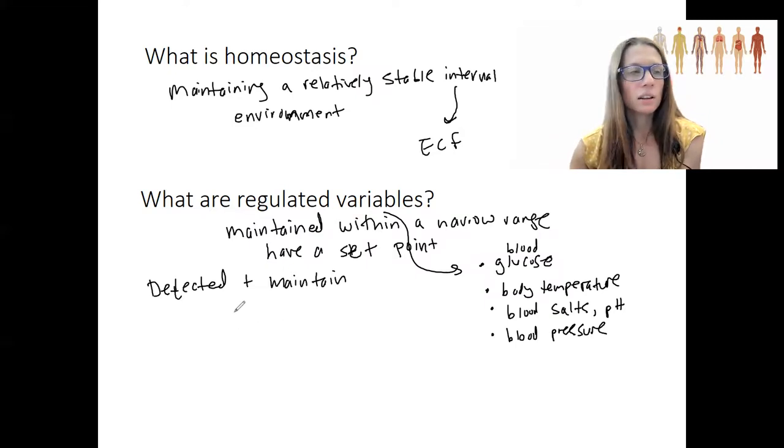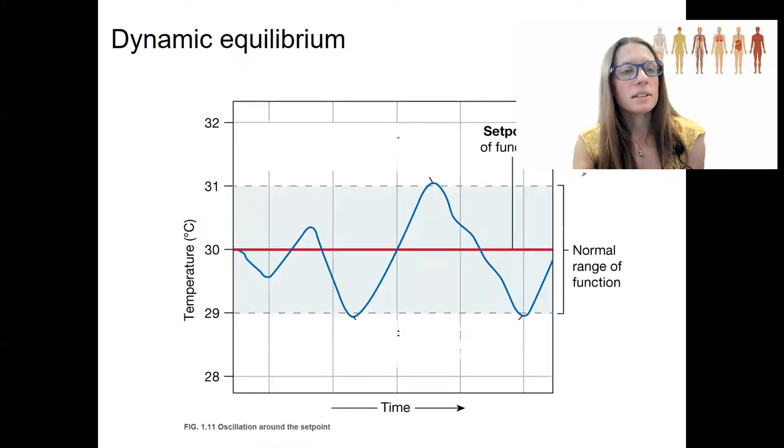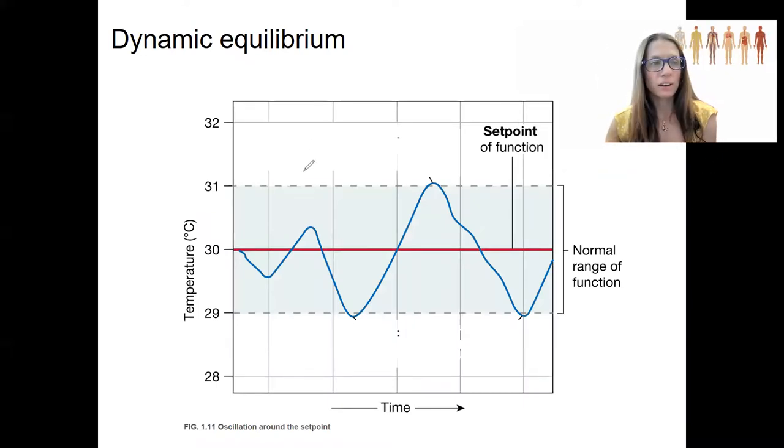Let's see an example. This is an example of a regulated variable, temperature. So, body temperature, 30 degrees, it's about 98 degrees Fahrenheit. Actually, I think I checked that once and it wasn't the same. So, let's just say normal body temperature. That's our set point.